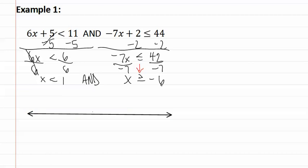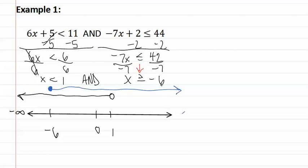Now we draw the inequalities. Let's put zero and each of the numbers from our inequalities on the number line. We have x is less than one, which means an open dot that goes in the less than or negative direction towards negative infinity. We also have x is greater than or equal to negative six, which means a closed dot that goes towards positive infinity. There's only one portion that overlaps — that is from the closed dot at negative six all the way to the open dot at positive one.